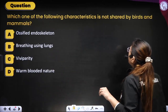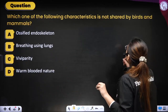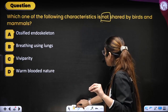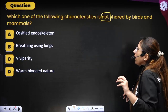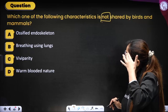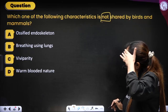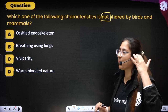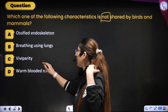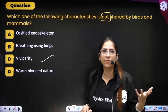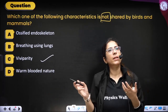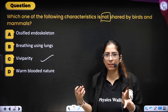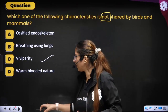Next question: which characteristic is not shared by birds and mammals? Ossified endoskeleton — shared. Breathing using lungs — shared. Viviparity — not shared, because birds lay eggs while most mammals are viviparous. Correct answer is viviparity.